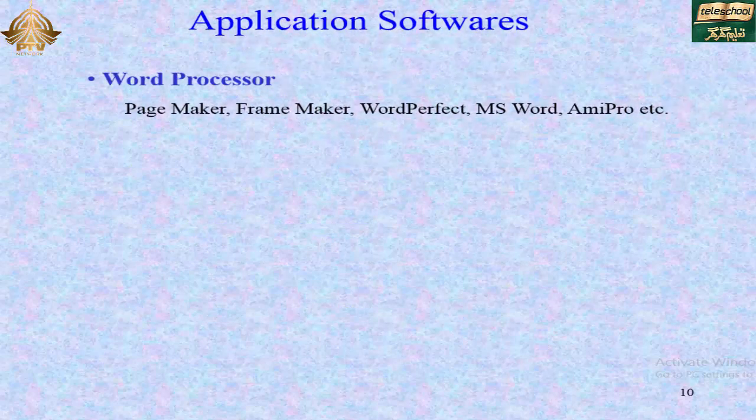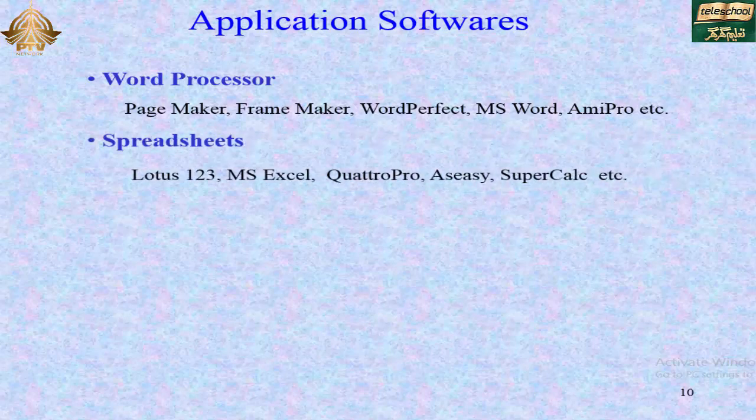Application software examples include word processors such as PageMaker, FrameMaker, WordPerfect, MS Word, and MAPro. Spreadsheet software includes Lotus 123, MS Excel, Corel Pro, SSA, SuperCalc, and others.